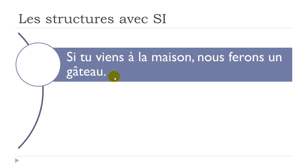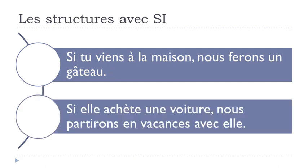Second example: SI ELLE ACHÈTE UNE VOITURE — ACHETER is to buy, UNE VOITURE is a car — NOUS PARTIRONS EN VACANCES AVEC ELLE. PARTIR is to leave, and you have the future form: we will leave on holiday with her. You can see here the present form followed by the future form. Remember: SI plus présent, then the future.